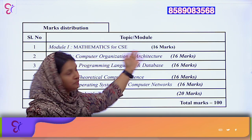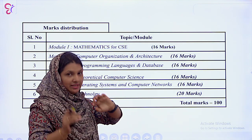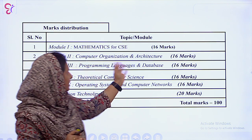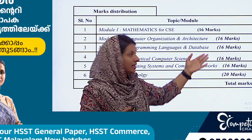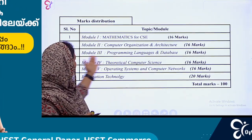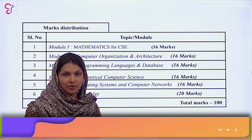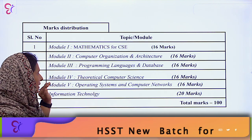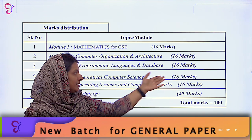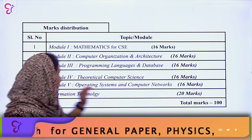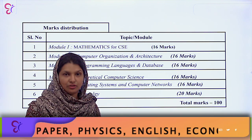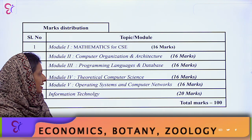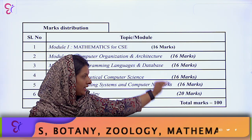In the first module, it is Maths — Computer Science Engineering — 16 marks. Then in the second module, Computer Organization and Architecture, it is 16 marks. Then in module 3, Programming Languages and Databases, it is 16 marks. Then in module 4, Theoretical Computer Science Analysis, it is 16 marks. Then in module 5, OS and Computer Networks, it is 16 marks. Then IT — Information Technology — it is 20 marks. Total: 100 marks.